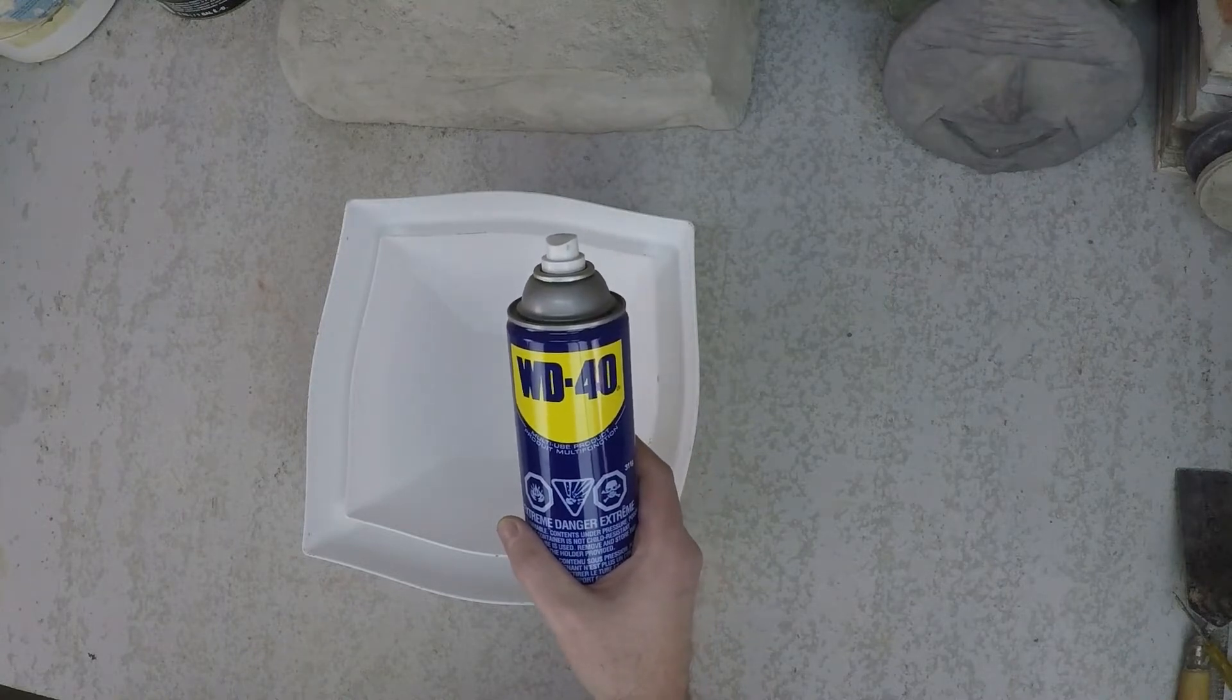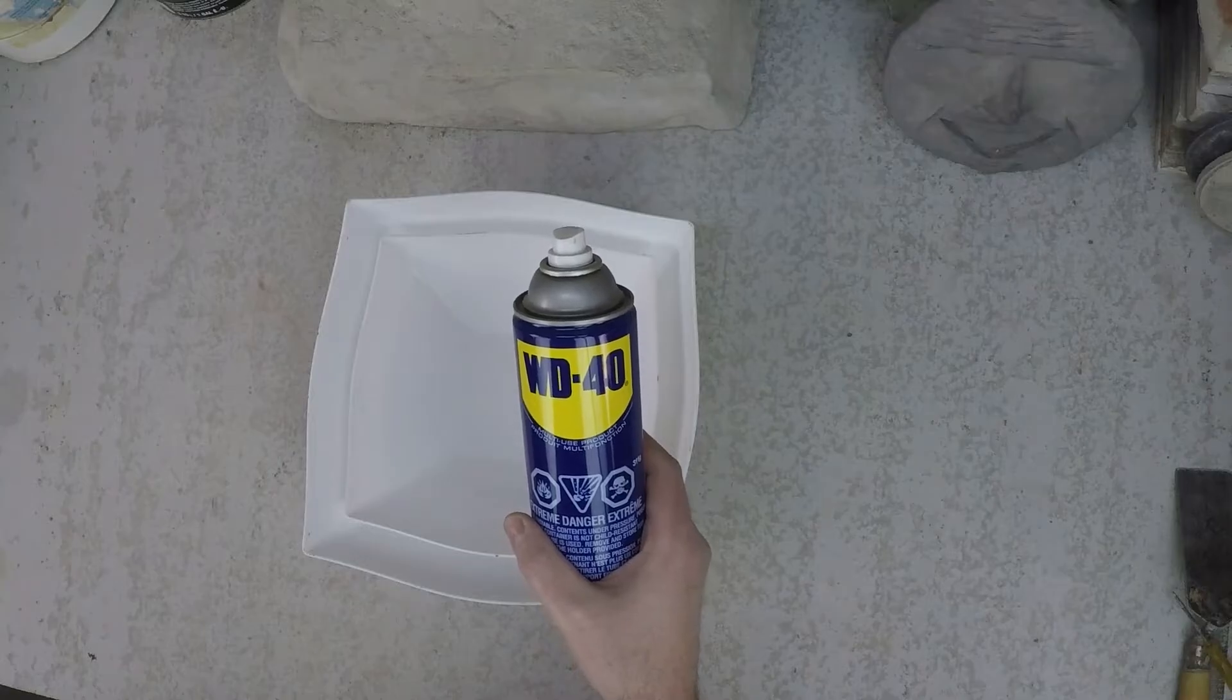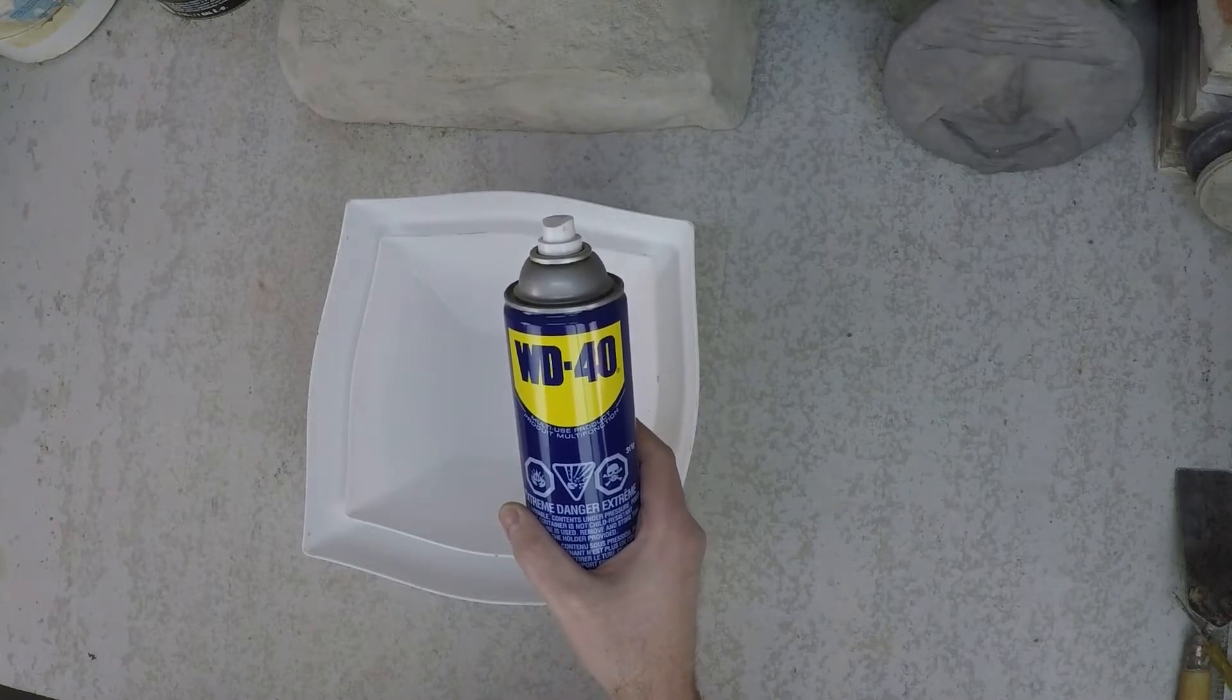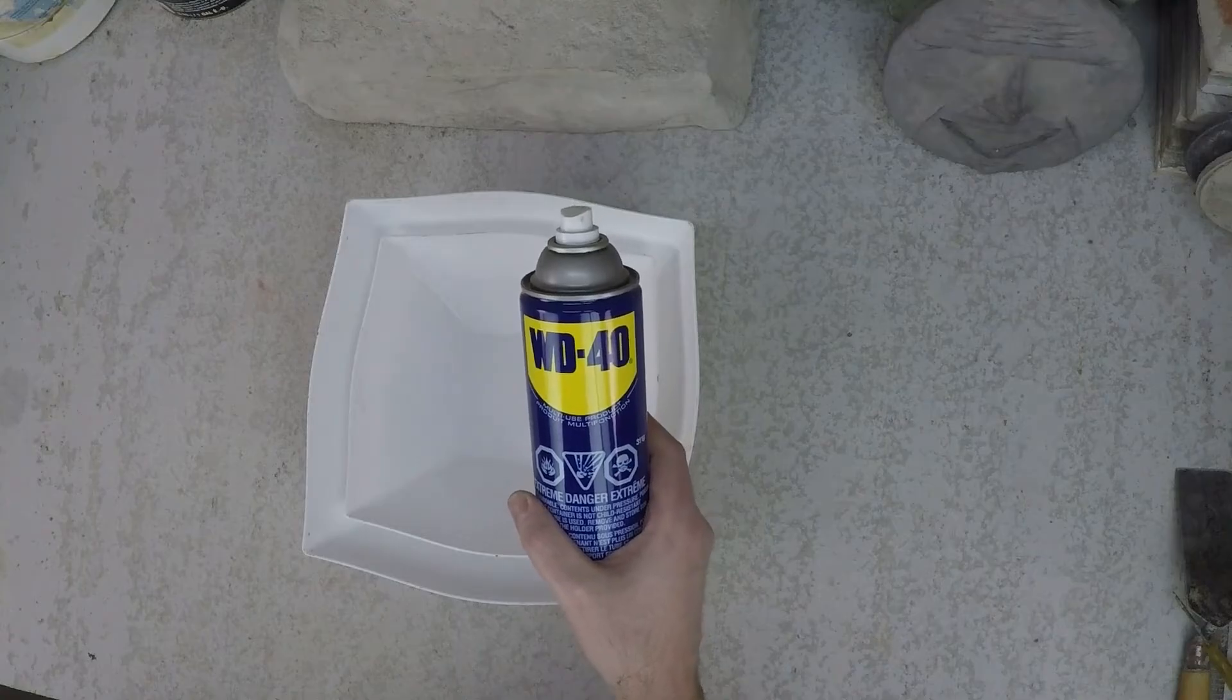I would not attempt to use WD-40 if you're going to cast silicone into silicone or urethane into urethane. It would not be suitable for that application.